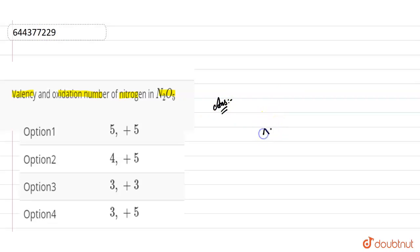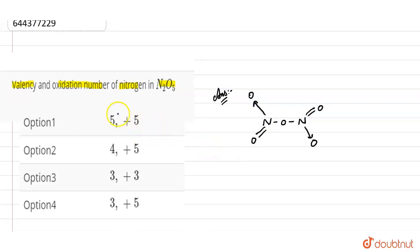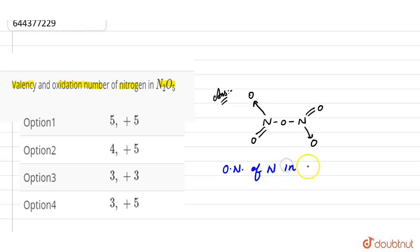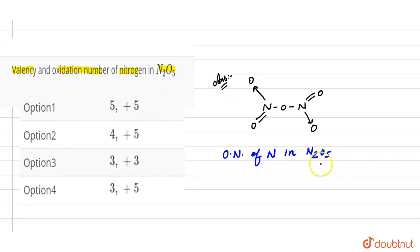Here, nitrogen is shared by one oxygen. First of all, we will find out the oxidation number of nitrogen in N₂O₅. For nitrogen, we will put x — so the oxidation number is x.